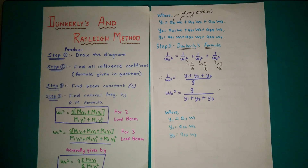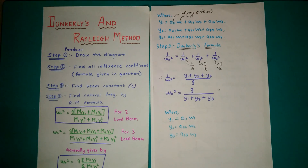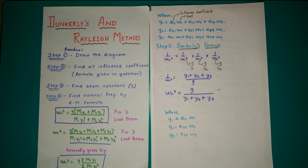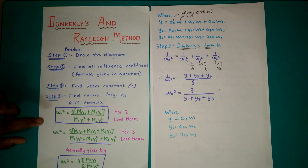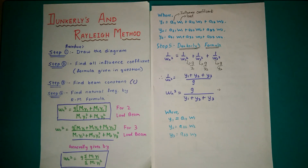Step 3 involves finding the beam constant — I will explain it properly when we solve the numerical. Step 4 involves finding natural frequency by Rayleigh's method formula. The Rayleigh's method formula is: omega_N squared equals G (gravitational acceleration) times the summation of M_i * Y_i, divided by the summation of M_i * Y_i squared. This is the formula for a beam loaded with 2 loads, and this is the formula for a beam with 3 loads.